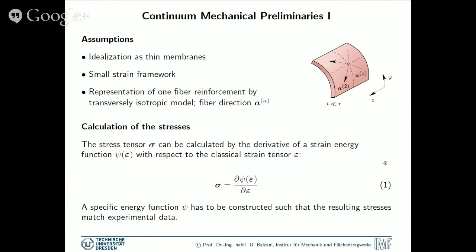So those two materials are going to be basically calculated in my task. First, some continuum mechanical preliminaries that you may need. So we consider only idealizations as thin membranes, although we know that, in particular, diseased arteries may not be really thin. However, this is a necessary idealization to calculate this analytically. Then we focus on the small strain framework, although the materials undergo large strains, but that's just for simplification.